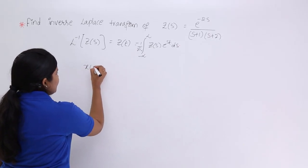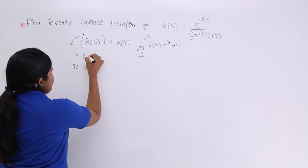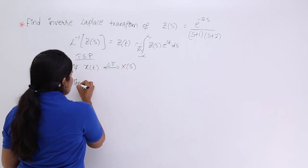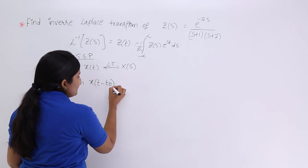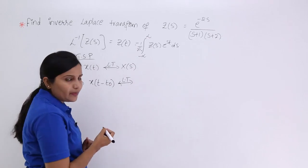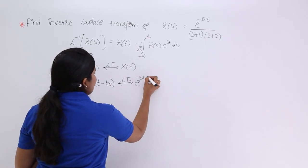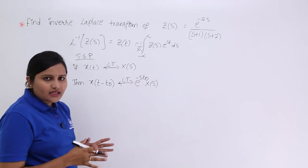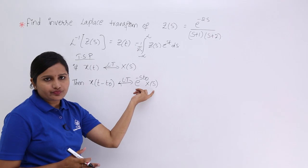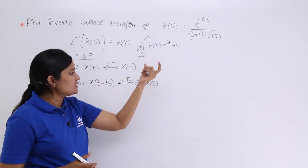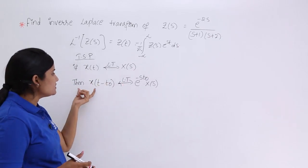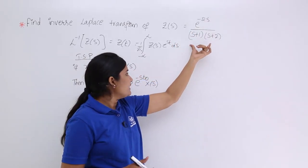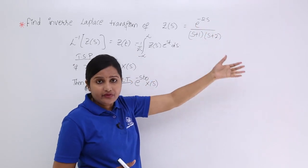What does the time shifting property state? If X(T) has Laplace transform X(S), then the time shifting property states that if we delay the input signal X(T) and consider its Laplace transform, that Laplace transform changes to e^(-ST0) times X(S).